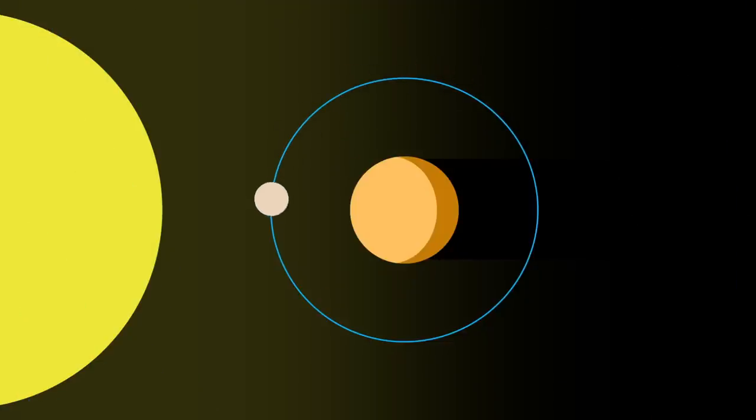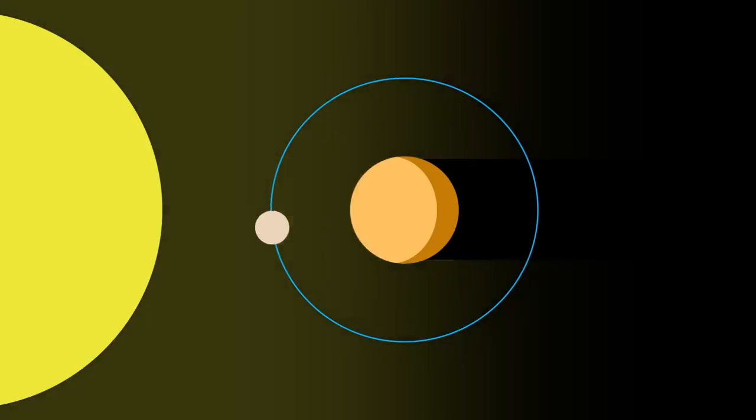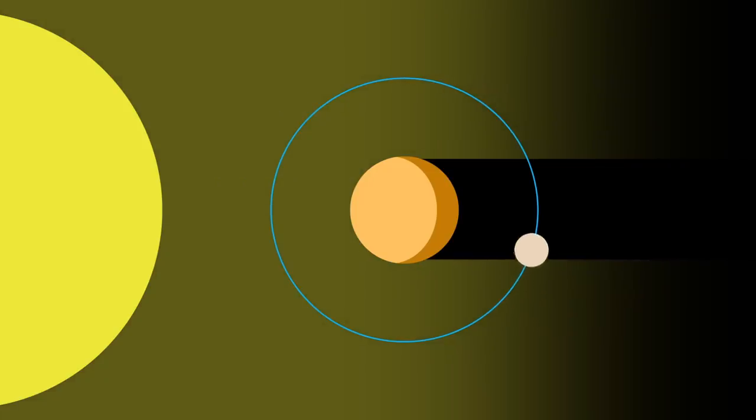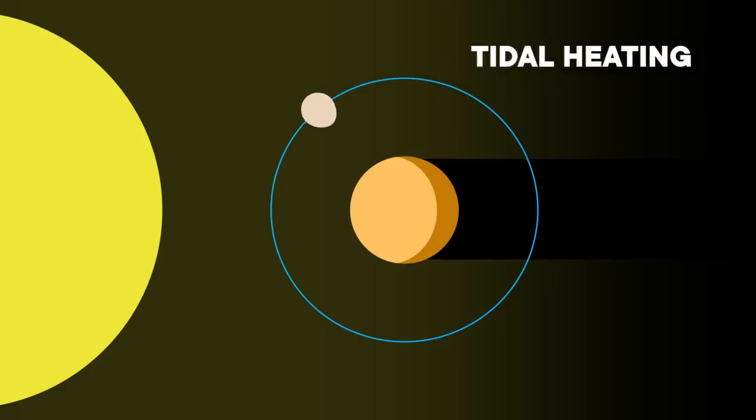Planets can reflect a star's light onto a moon and maybe even radiate some heat of their own. On the other hand, a small moon orbiting a big planet could have lots of long eclipses, which would block the star's light. Another source of heat for moons is tidal heating.